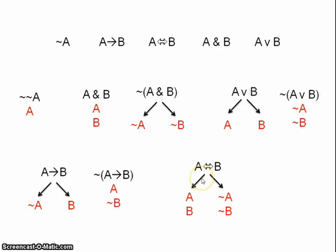Biconditional. The biconditional tells us that both A and B have the same truth value. We don't know what the truth value is, but we know that either they're both true or they're both false. So, we need to split our tree. On one side, we assume they're both true and on the other, we assume they're both false.